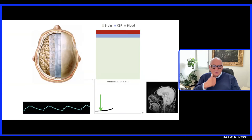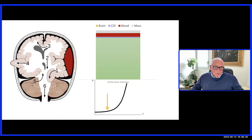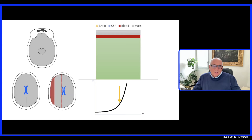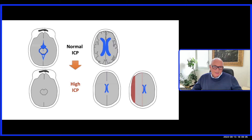Returning to the cartoon: starting from a normal condition and adding extra volume, the patient moves rightward on the pressure-volume curve. Initially, the extra volume is compensated by reduction of the ventricles, so there is no rise in ICP. But when this buffering mechanism is exhausted — the ventricles are squeezed and there is little CSF left — small changes in volume produce large changes in pressure. You can see from the curve that there is no longer any compensatory element inside the skull.